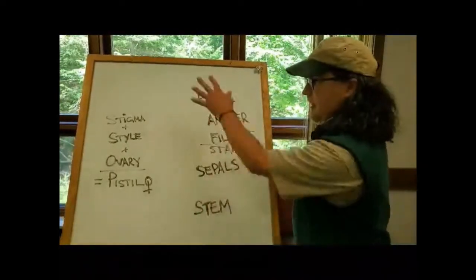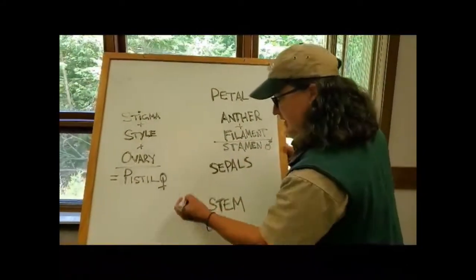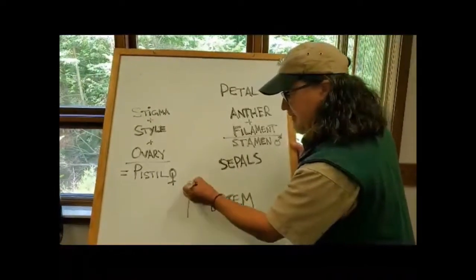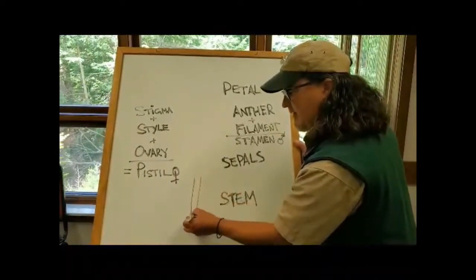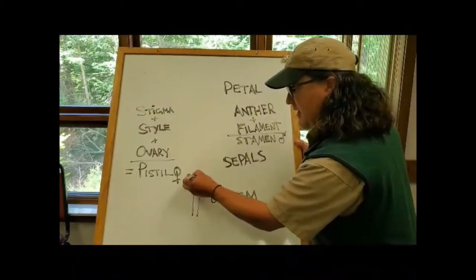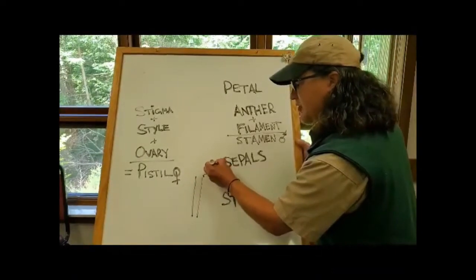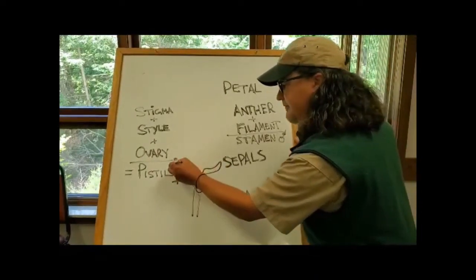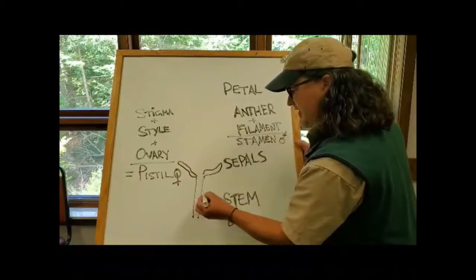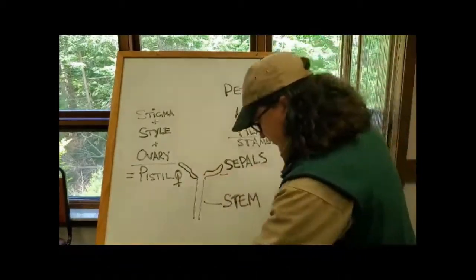I already set up the things that I'm going to point out, but let's draw these parts now. So we've got the stem of a flower. Flowers aren't normally this big, so keep in mind that these normally will be smaller. This is the stem and these are the sepals.